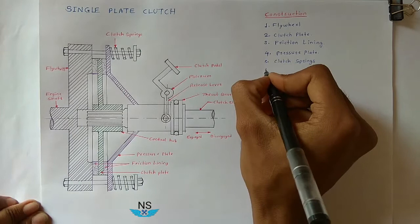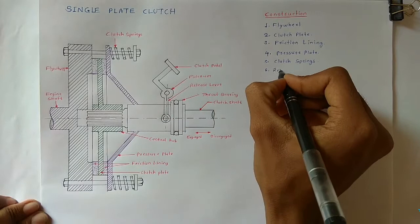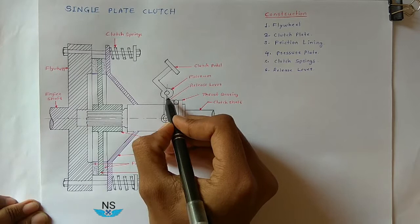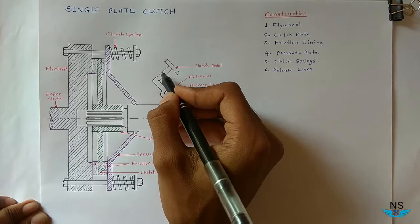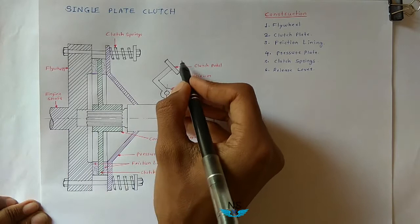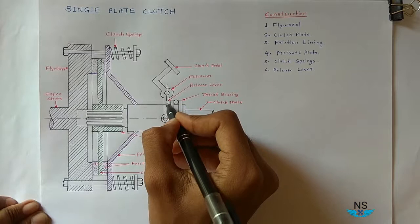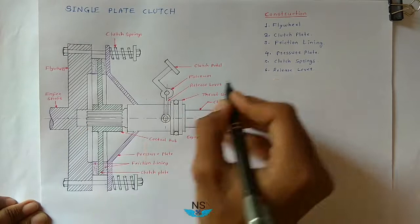The next part is the release lever. The release lever is pivoted at a fulcrum pin. It is used to transmit the motion of the clutch pedal to the pressure plate, so that the pressure plate can be moved. The release lever transmits the motion of the clutch pedal to the pressure plate.